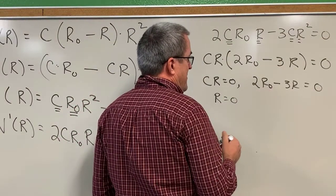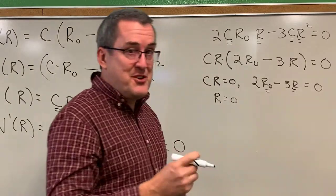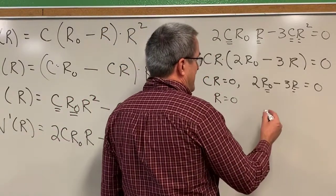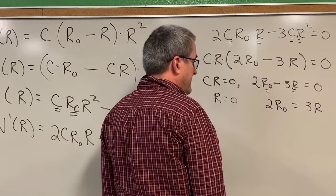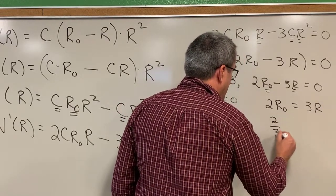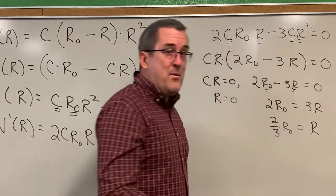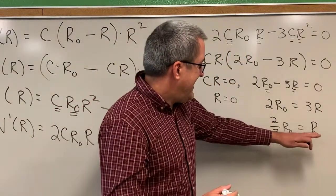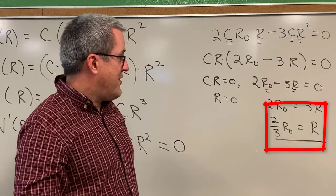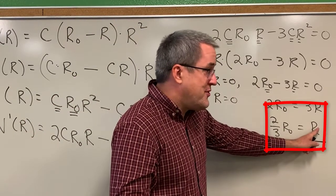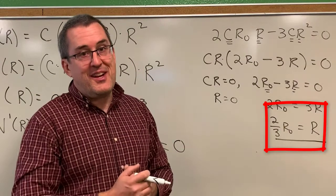Let's look at the condition 2R sub zero minus 3R equals zero. R sub zero is the normal resting trachea radius, and R is the radius of the trachea as it changes during a cough. So 2R sub zero equals 3R, and if we divide both sides by 3, two thirds of R sub zero equals R. If the radius of your trachea during a cough is two thirds of its normal resting radius, that's where you're going to get maximum airflow.